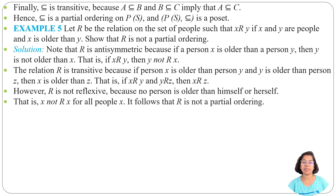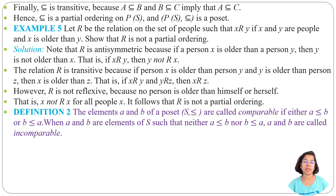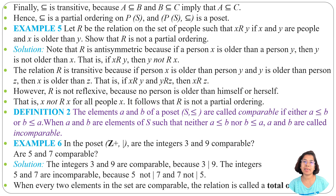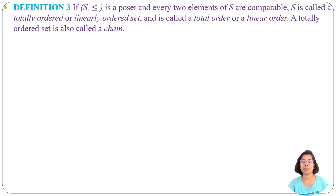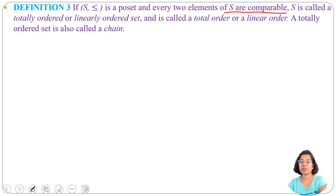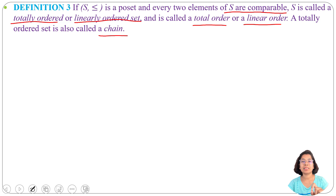Two elements A and B in a poset S are comparable if either A is related to B or B is related to A. When every two elements of a set are comparable, it is called a total ordering. Also called a linear ordering or a chain.